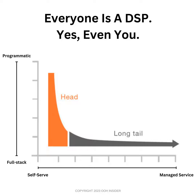So what would the opposite of that be? It's not self-service — it would be managed service. And if it wasn't just programmatic, it would be all of out-of-home: full-stack out-of-home, traditional out-of-home, programmatic out-of-home, digital out-of-home, wild postings, experiential — all of those things. Full-stack out-of-home, including all of the formats and all of the buying methods, not exclusively limited to digital formats available programmatically.